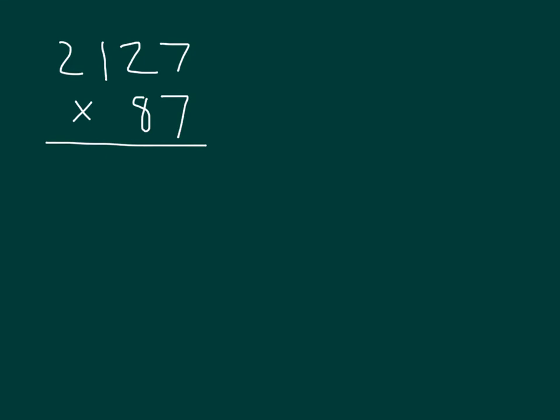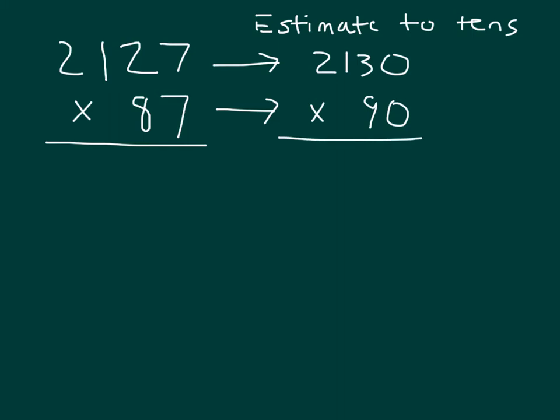Let's work out another problem: 2,127 times 87, and again we'll estimate to the tens place. In estimating to the tens place, we round each of those factors. 2,127 is close to 2,130, times 87, which is close to 90. And we'll notice, just to think about it, that we've actually increased this factor by 3, meaning that if we multiply that by this, our estimate is actually going to be about 6,000 more than our actual answer still.